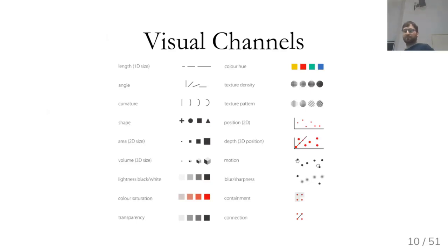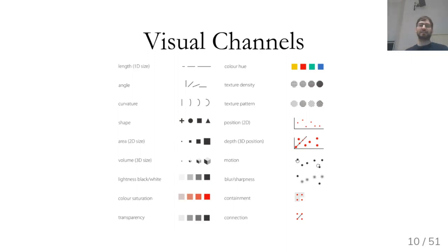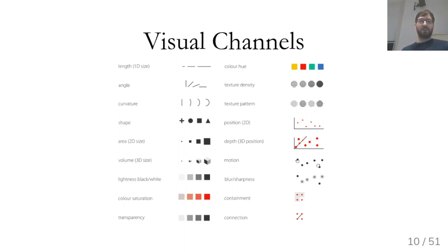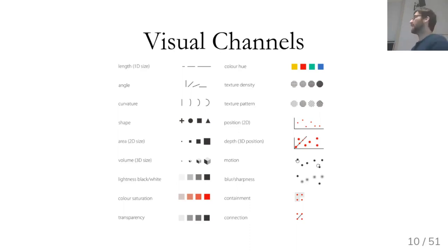One of the things is it helps to think of the different visual channels we can use. Here is a list — I linked the source as a PhD thesis in the materials, and you can also find this in Wilke's book. You have things like length, angle, curvature, shape, area, volume, different aspects of color like brightness, saturation, hue, texture, and then position and different groupings.